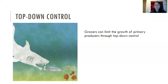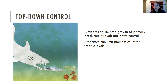The final lecture is going to talk about top-down control in food webs. We know that grazers can limit the growth of primary producers — this is called top-down control. Predators can limit the biomass of lower trophic levels. For example, a shark eating fish means fewer fish are around to eat the small fish.